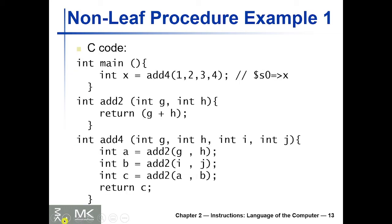Let's look at a straightforward example for a non-leaf procedure. We have a C function called add4, which adds four numbers together in three steps: first we add one and two to get three, then we add three and four to get seven, then we add three and seven to get ten. To do this, since we add two numbers at a time, we reuse the add2 function, which is a leaf procedure. add4 calls add2, making add4 a non-leaf function.